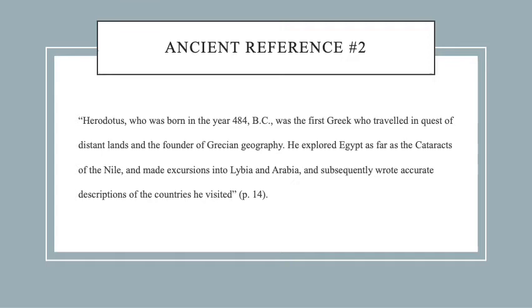The second example is found on the very next page. Reverend Stanford states: 'Herodotus, who was born in the year 484 BC, was the first Greek who traveled in quest of distant lands and the founder of Grecian geography. He explored Egypt as far as the cataracts of the Nile and made excursions into Libya and Arabia, and subsequently wrote accurate descriptions of the countries he visited.' Here Stanford not only connects the history of colonization and enslavement to the ancient world but connects himself to the lineage and legacy of historians like Herodotus.